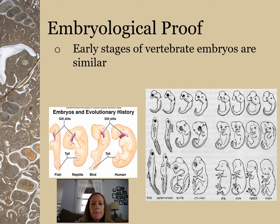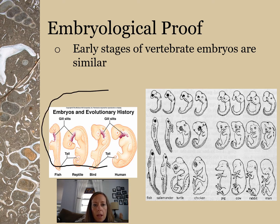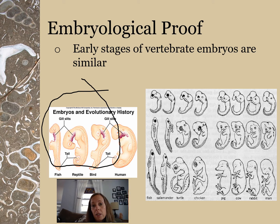Now for E — embryological proof. We look at the early stages of vertebrate embryos and note that they're similar. Looking at the picture, you can see gill slits and ridges, and they all have tails. Those are similarities visible in the beginning pictures, and by the end pictures they've developed into distinct organisms.